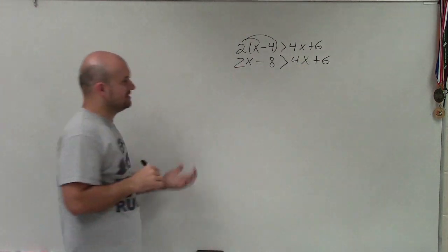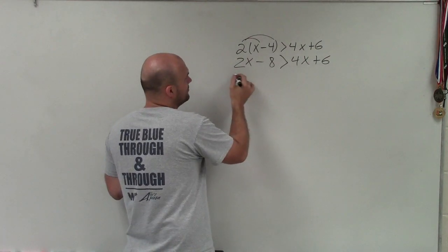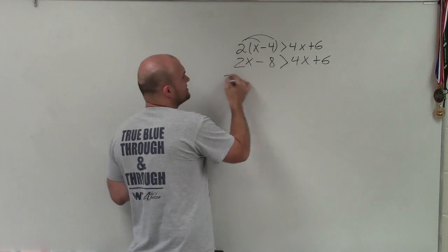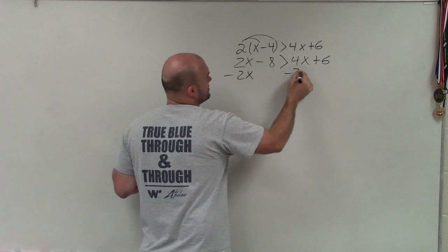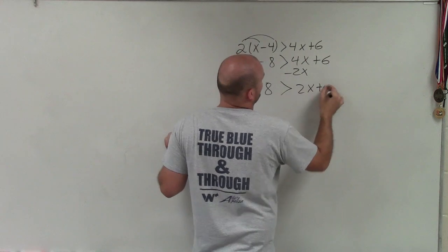Now you look at this and say, alright, I need to get the x's to the same side. I can decide if x is on the left side or the right side. I will put the x's over on the right side. Therefore, I have negative 8 is greater than 2x plus 6.